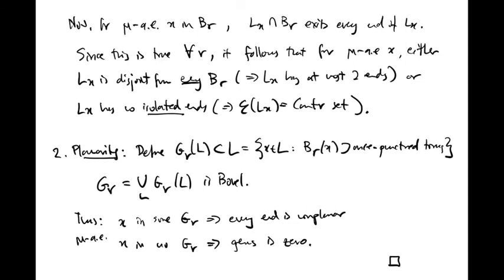Now, the proposition fundamental implies that for mu almost every point x in the set B r, the leaf L x intersects B r in every end of L x. Since this is true for all r, it follows that for mu almost every point x, either L of x is disjoint from every B r, which implies that L of x has at most two ends, or L of x has no isolated ends, which implies that its set of ends is a Cantor set.